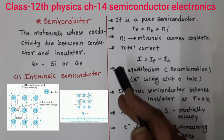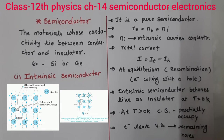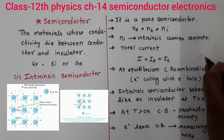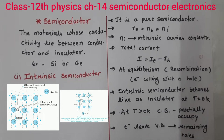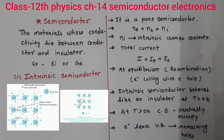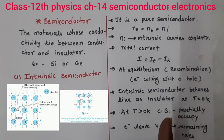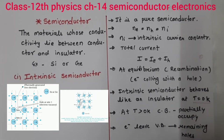Equilibrium condition mein yeh hota hai ki holes and electrons collide karte hain aur recombine ho jate hain — ek hi point par concentrate ho jate hain. Pure intrinsic semiconductor behave karte hain as an insulator, kyunki intrinsic semiconductor mein koi impurity add nahi ki. So impurity add nahi ki, it means intrinsic semiconductor insulator ki tarah behave karta hai jab temperature 0 Kelvin rakha jata hai.